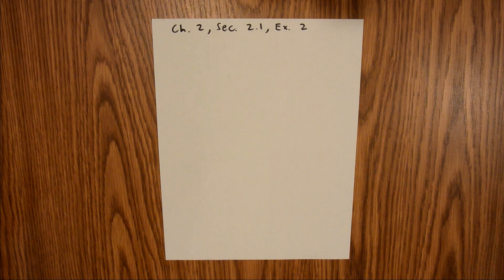What is going on YouTube? Just helping you out here. For today's video, I'll be doing Chapter 2, Section 2.1, Exercise 2, in the Calculus Single Variable 6th Edition textbook by Hughes Hallett, Gleason, McCallum, et al.